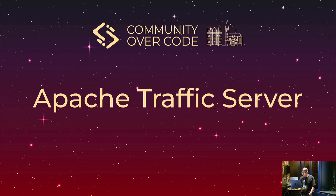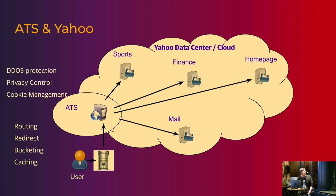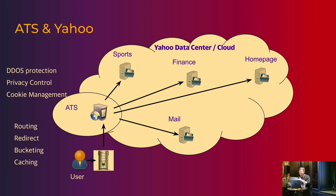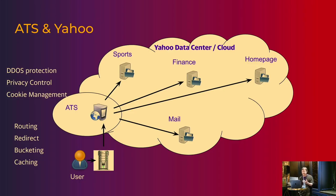In Yahoo we have a lot of web properties like Sports, Mail, Finance, and the homepage, and they all have their own application servers to serve those applications. But user requests don't go directly to those application servers — rather, the requests reach a layer of edge servers where we use ATS to serve them, and ATS proxies the request to the application server instead.